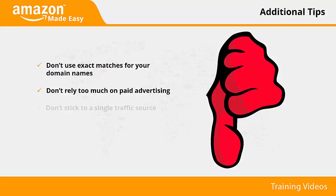Don't stick to a single traffic source. Sticking to a single source of traffic can be as defeating as not tracking and optimizing your descriptions or affiliate offers regularly. There is a reason why the most successful sellers and affiliate marketers tell you to work on multiple product variations or affiliate websites at the same time. By getting traffic and prospects from different sources through different channels, you can see what works best so you can ultimately narrow down your options and adapt accordingly.